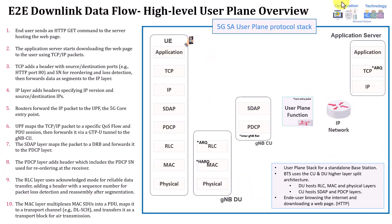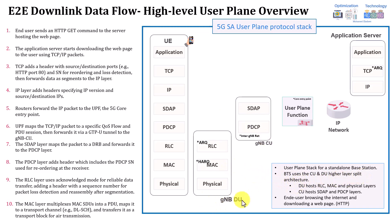This slide covers the high-level view of how data is transferred end-to-end. I've summarized it into 10 points, though there are even more. As an example, from the end-to-end perspective, assume you as a user are trying to do web browsing — specifically an HTTP download of a web page. I've assumed the gNB is using CU/DU high-layer split architecture, where the DU hosts the RLC, MAC, and physical layers, and the centralized unit hosts the SDAP and PDCP layers.